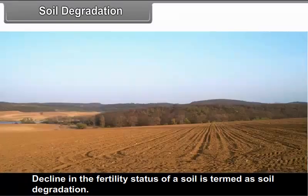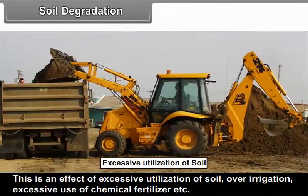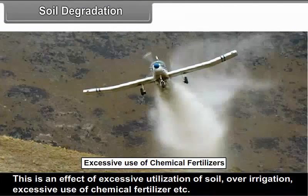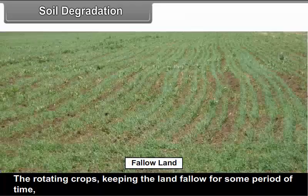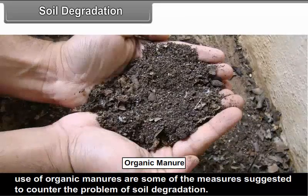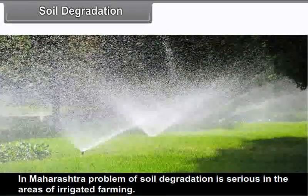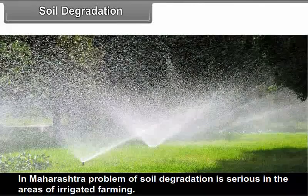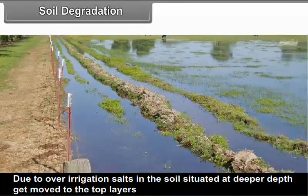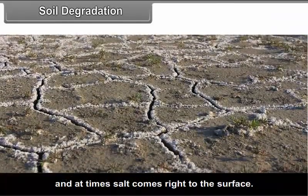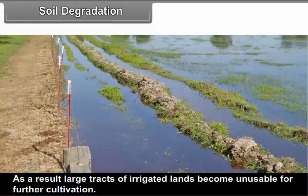Soil degradation: Decline in the fertility status of a soil is termed as soil degradation. This is an effect of excessive utilization of soils, over-irrigation, excessive use of chemicals and fertilizers. Rotating crops, keeping the land fallow for some period of time, and use of organic manures are measures suggested to counter soil degradation. In Maharashtra, the problem of soil degradation is serious in areas of irrigated farming. Due to over-irrigation, salts at deeper depths get moved to the top layers, and at times salt comes right to the surface. As a result, large tracts of irrigated lands become unusable for further cultivation.